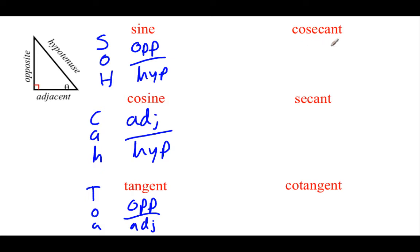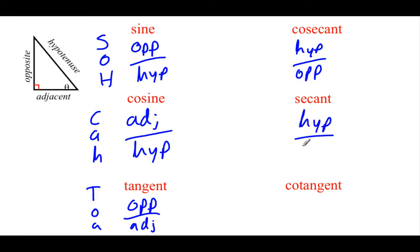Now looking at the reciprocal functions: sine and cosecant are related to each other — all we do is flip that fraction over. So to build the cosecant, we go hypotenuse over opposite. Similarly, cosine and secant are related; we go hypotenuse over adjacent. And tangent and cotangent are reciprocals of each other, so we go adjacent over opposite.